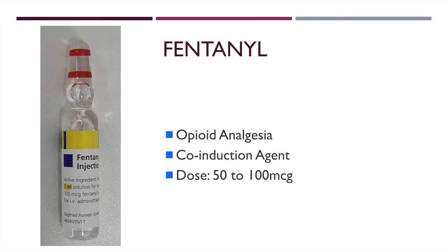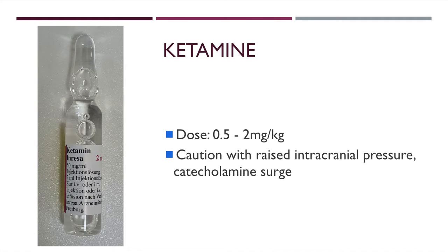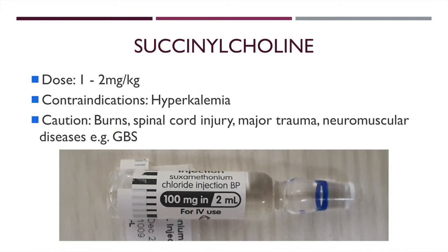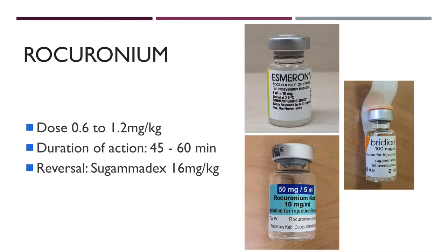Fentanyl can be used as a co-induction agent and it comes in 100 mcg in 2 mL. The last one is ketamine which comes in 100 mg in 2 mL. It can be useful for patients who are hypotensive and it does have some bronchodilator properties as well. For paralytic agents, the most common agent that we use is succinylcholine and this comes in 100 mg in 2 mL. Always remember that hyperkalaemia is a contraindication for succinylcholine. An agent that we sometimes use is rocuronium and this comes in 50 mg in 5 mL as shown in the image.